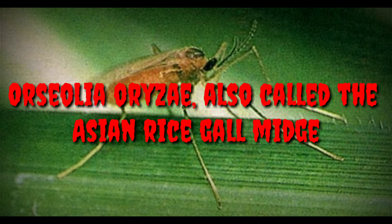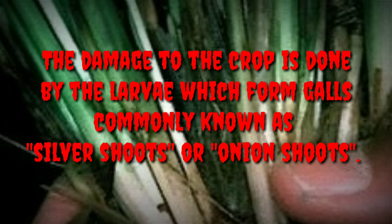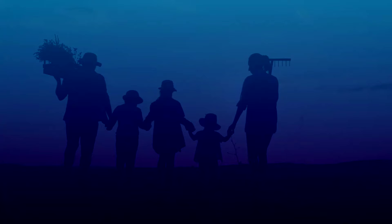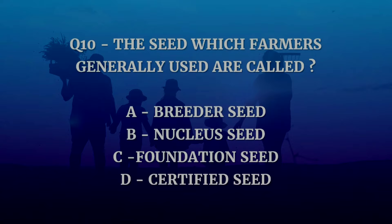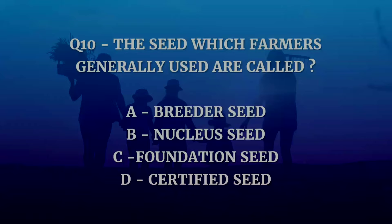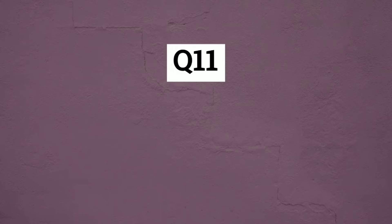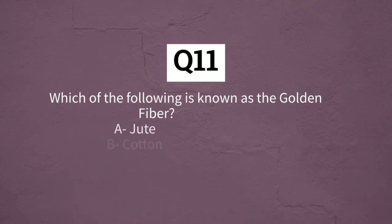Orseolia oryzae, also known as the Asian rice gall midge, is a species of small fly in the family Cecidomyiidae. It is a major insect pest of rice; the damage to the crop is done by the larva, which forms galls commonly known as silver shoots or onion shoots. Question number ten: the seeds which farmers generally use are called certified seeds.